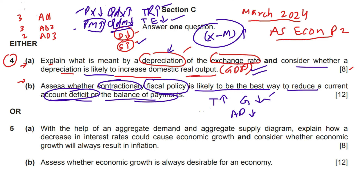When the price level in the local economy is low, exports may rise because they are cheaper for foreign buyers, so export earnings increase. Imports may fall because domestic goods are relatively cheaper. When export earnings are high and import payments are low, net exports increase and the balance of payments current account deficit is corrected.